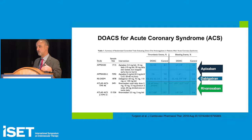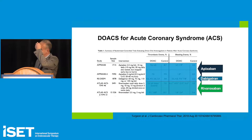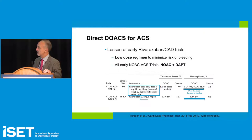Looking at DOACs in acute coronary syndrome — trials with apixaban and dabigatran showed some better thrombotic event control but significantly more bleeding, so they never saw the light of day for prevention of coronary or peripheral disease. With rivaroxaban, first at a higher dose then lower, there were lower thrombotic event rates. At the higher dose there was higher bleeding; at the lower dose, bleeding risk was acceptable while still preserving thrombotic risk reduction.